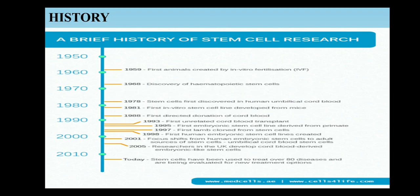Here is a brief history of stem cell research. In 1959, the first animal was created by in vitro fertilization. In 1968, discovery of hematopoietic stem cells was done. In 1978, just after 10 years, stem cells were first discovered in human umbilical cord blood. In 1981, the first in vitro stem cell line was developed from mice. Subsequently, in 2001, focus shifted from embryonic stem cells to adult stem cells.